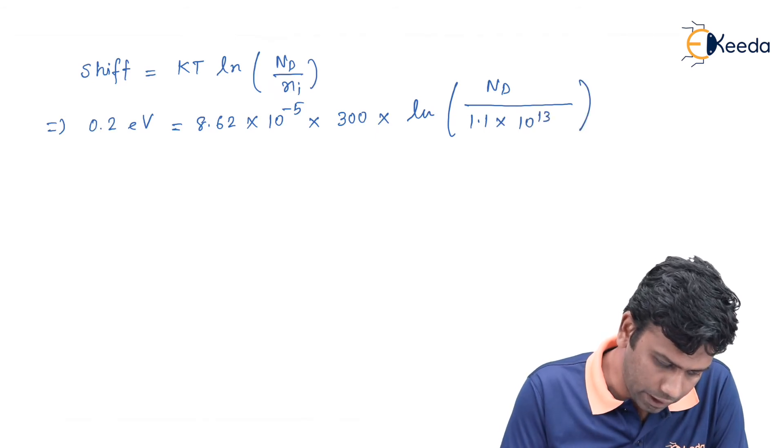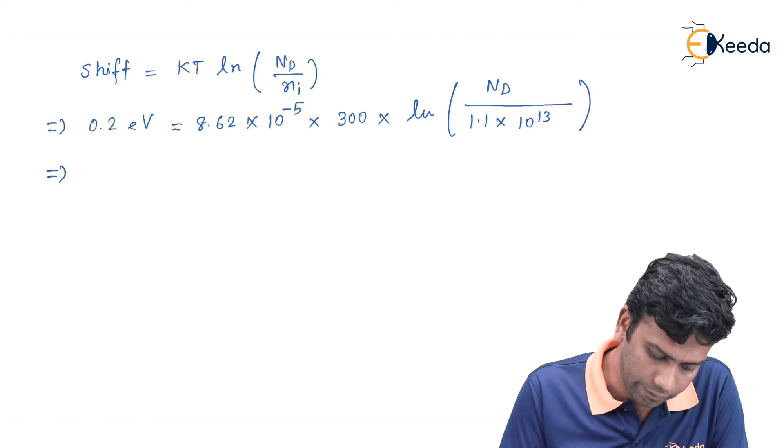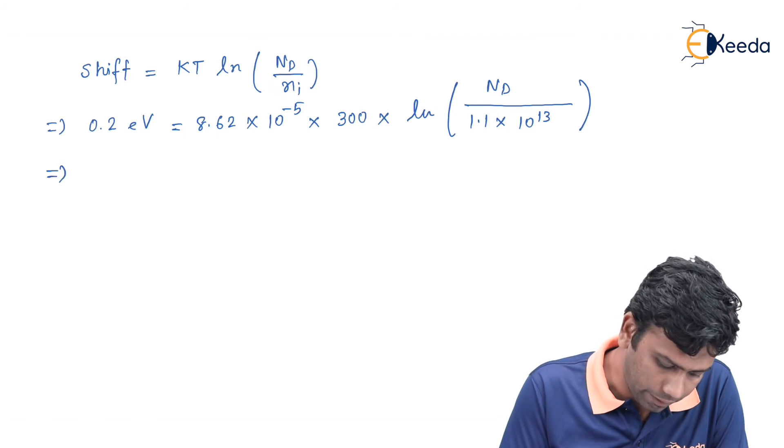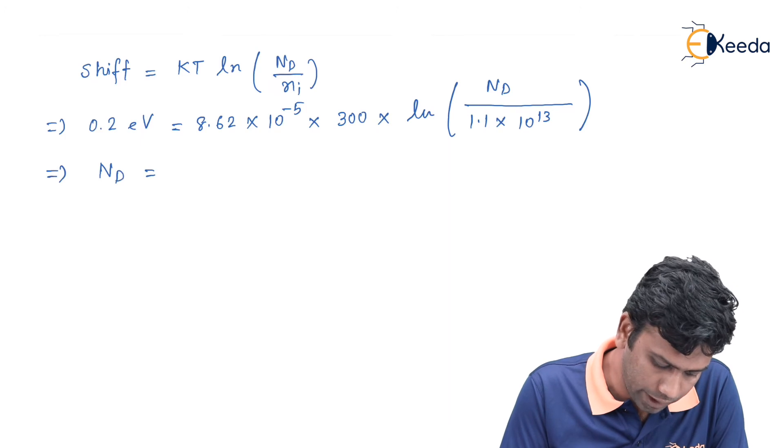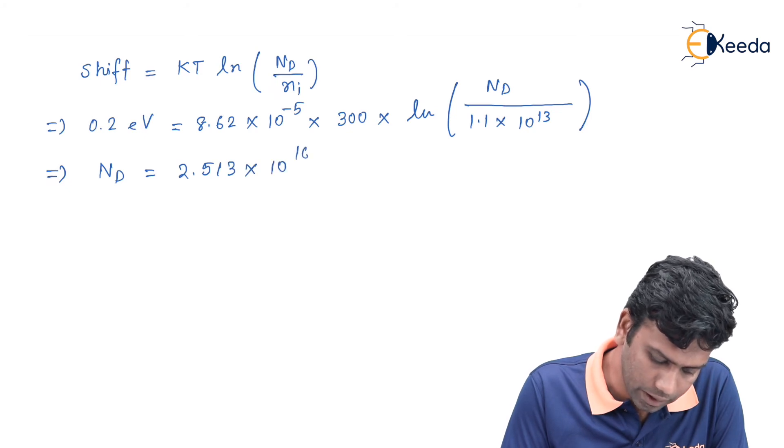From this equation we can calculate the value of Nd. The value of Nd will be 2.513 into 10 to the power 16 per centimeter cube.